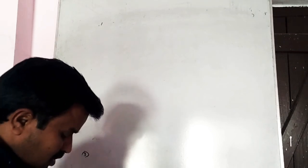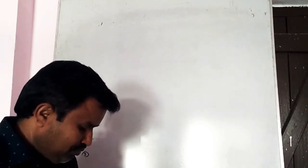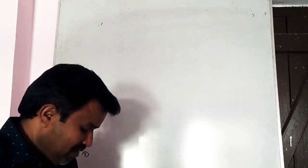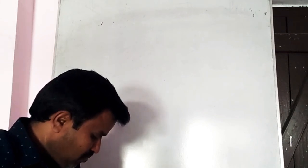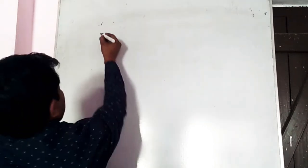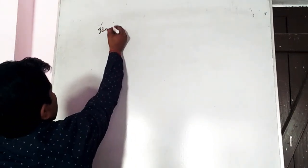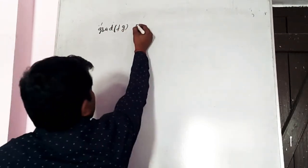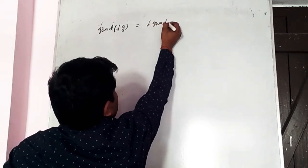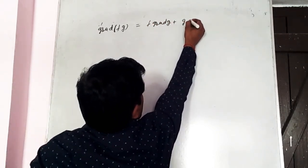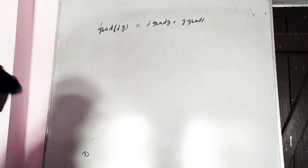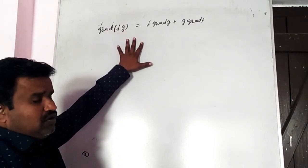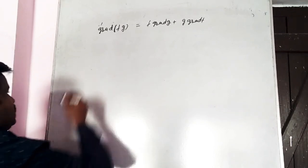Next property: gradient of the product of two scalar point functions. If f and g are scalar point functions, then grad(fg) = f·grad g + g·grad f. We have the gradient product of two points.